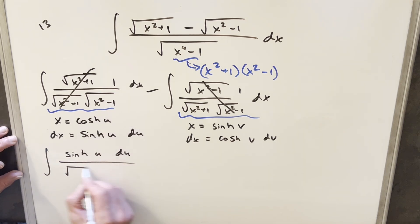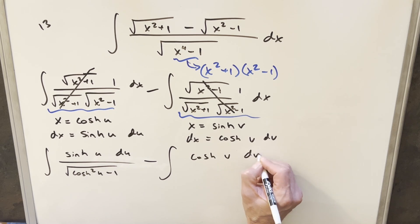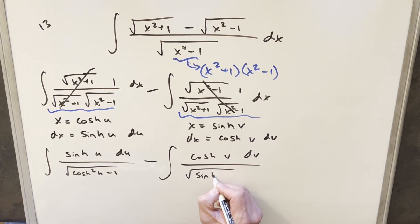And then here in the denominator, we end up with cosh squared u minus one. Then really similar over here, we're going to have cosh v dv, and then the square root, this thing, which is going to be sinh squared v plus one.